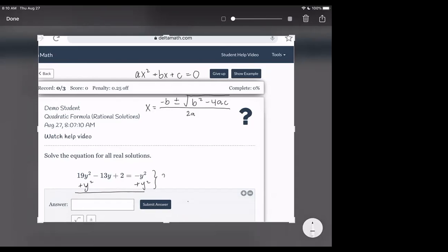So we'll have 20y² because 19y² plus y² is 20y². And then minus 13y plus 2 equals, and then over here they cancel out, will now equal zero.